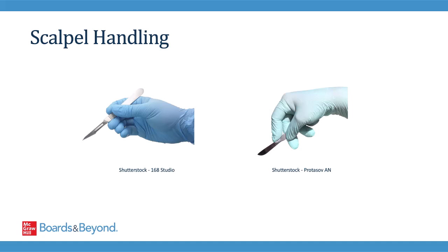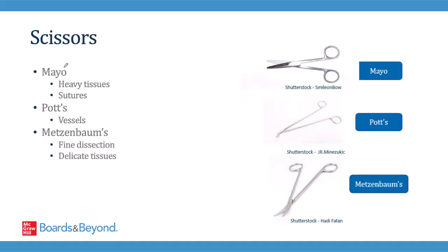Scissors are commonly used in the operating room. The Mayo scissors, like the ones you see on the screen here, are used to cut through heavy tissues as well as cut sutures — that's why they're also known as suture scissors. Pot scissors are often used in vascular surgery to make cuts in blood vessels, and the angled nature of the blades allows you to do that better. Metzenbaum scissors have a longer handle-to-blade ratio, and so they're often used for fine dissection in difficult-to-reach areas in order to help expose delicate tissues.